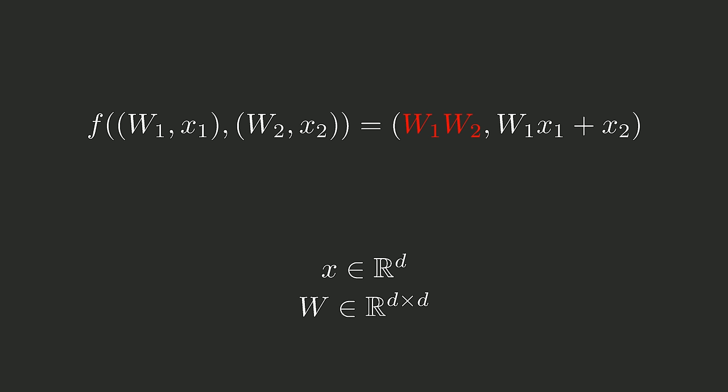Mamba proposes an elegant solution. Instead of using the same weights in each step, use different weights which depend on the input. Mamba applies a linear function to each input vector to generate a separate weight vector for that input, and then the recurrent scan is performed using these generated weights. This way, certain inputs can generate weights close to zero and thereby erase information from the output vector, while other inputs can generate weights close to one, leaving the output vector unchanged. Using different weights at each step also likely helps with vanishing and exploding gradients, since there should now be many different stable configurations, like in feedforward networks.